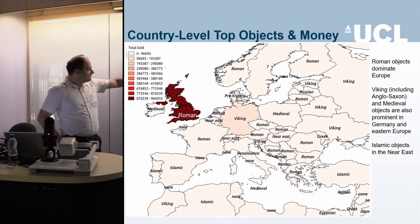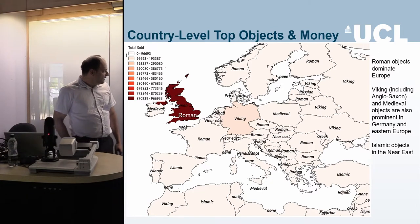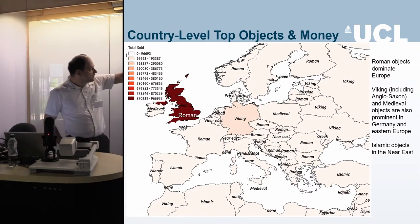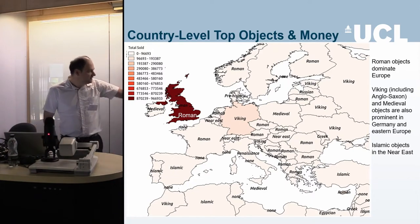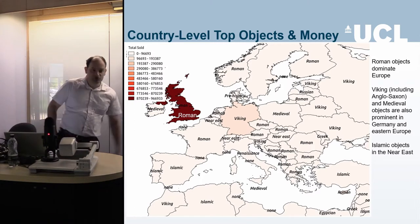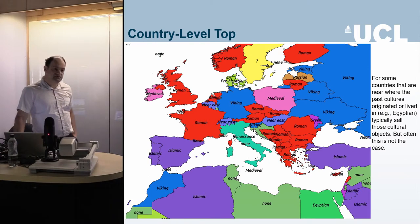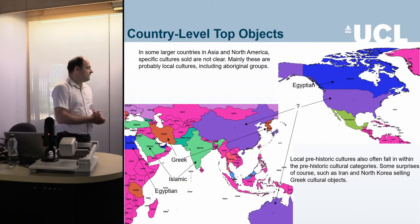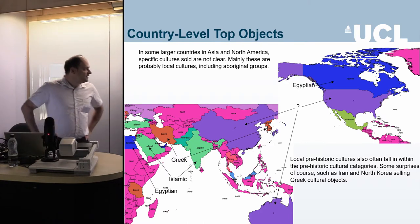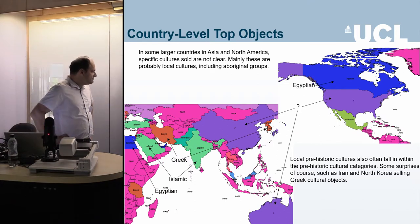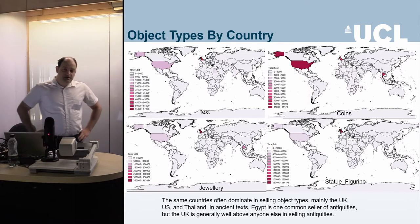Breaking down to country-level data, Roman objects have a wide sale area and sell everywhere, with Britain selling more than anyone else. In northern and eastern Europe, there are a lot of Viking culture sales. Islamic cultures appear in North Africa and Near Eastern regions, with some unexpected patterns — like Islamic cultures selling heavily in Spain, or Renaissance objects selling in Italy. Greek cultural objects appear a lot in Iran, and many unknown objects are found in both China and the United States.